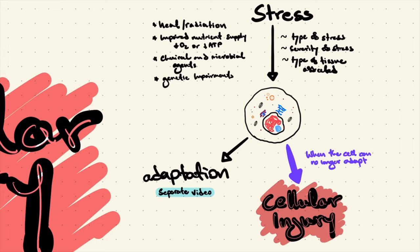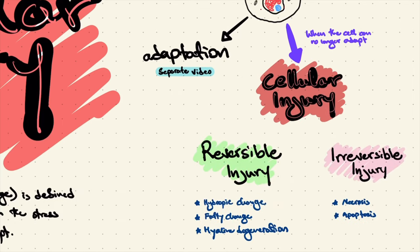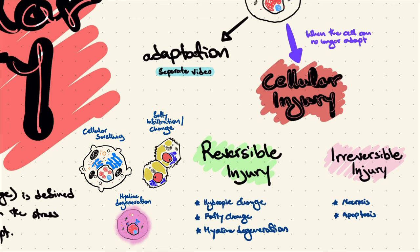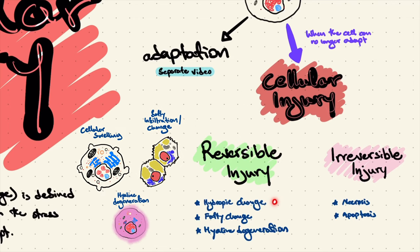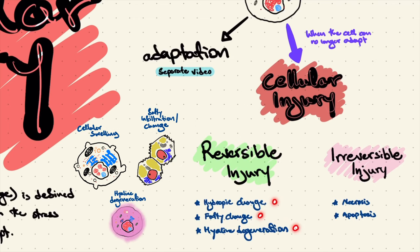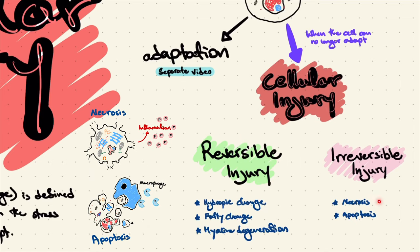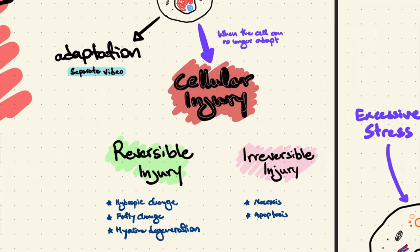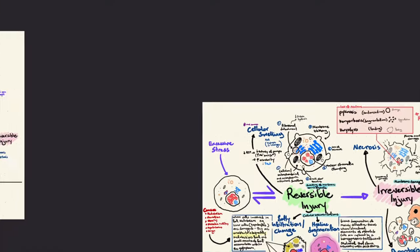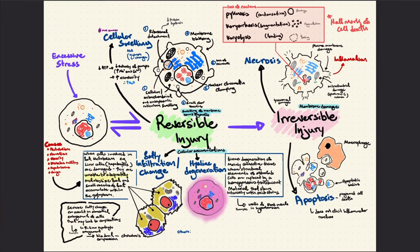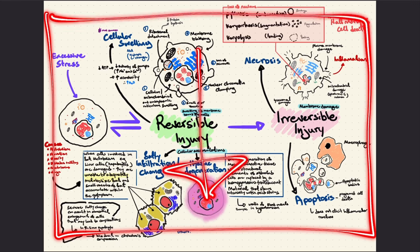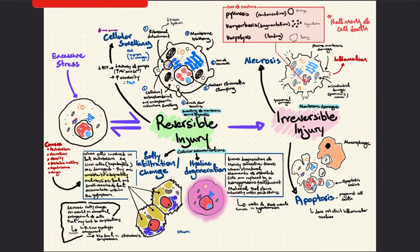Cellular injury can be reversible or irreversible. In this video we'll look into hydropic change, fatty change, and hyaline degeneration as examples of reversible injury. We will also look into necrosis and apoptosis as examples of irreversible injury. You can find a copy of the notes in the description box below — just make sure you subscribe and like the video.